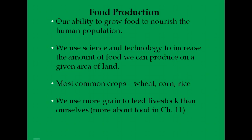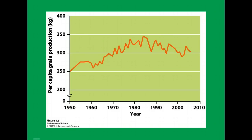The next global indicator is food production. We'll discuss common crops and whether we can sustain the human population. We use science and technology to increase food production. This graph shows grain production per capita — per person — since the 1950s. While global grain production has increased fairly steadily since the 1950s due to irrigation, fertilization, new crop varieties, and GMOs (genetically modified organisms), per capita production has started to level off.